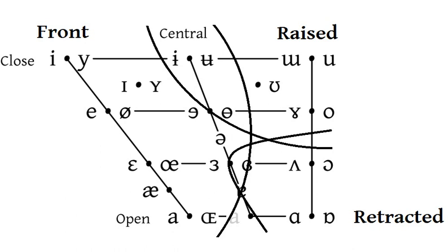Rounded front vowels are typically centralized, that is, near-front in their articulation. This is one reason they are written to the right of unrounded front vowels in the IPA vowel chart.